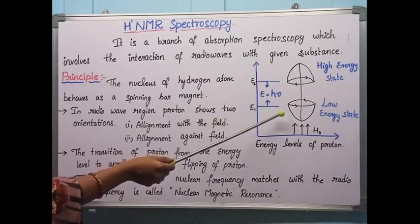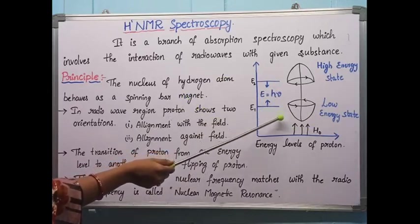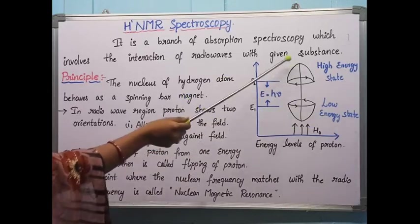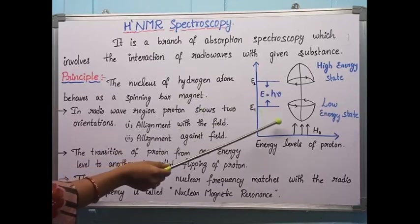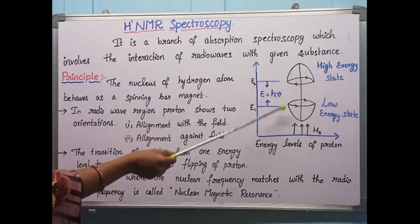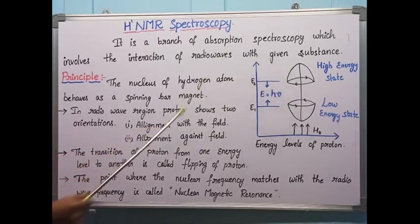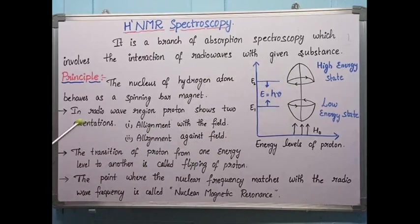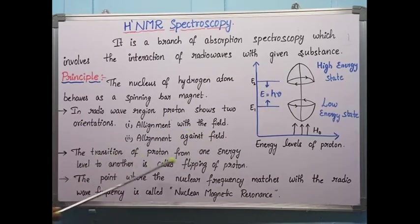The proton then returns back to the low energy state and shows same alignment with the external magnetic field. This process of the proton transitioning from one energy level to another energy level is called flipping of the proton.